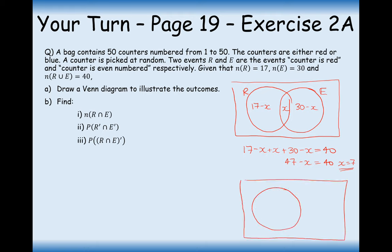Let's redraw this Venn diagram. It's going to be 7 in the middle, 7 red counters that are even. It's going to be 10 counters that are red but not even, and 23 counters that are even and blue. Let's work out these probabilities now. Find the number of counters that are red and even—that's 7. The probability that it's not red and not even is the number of counters on the outside. We have 30 plus 10, that's 40, so we have 10 counters on the outside.